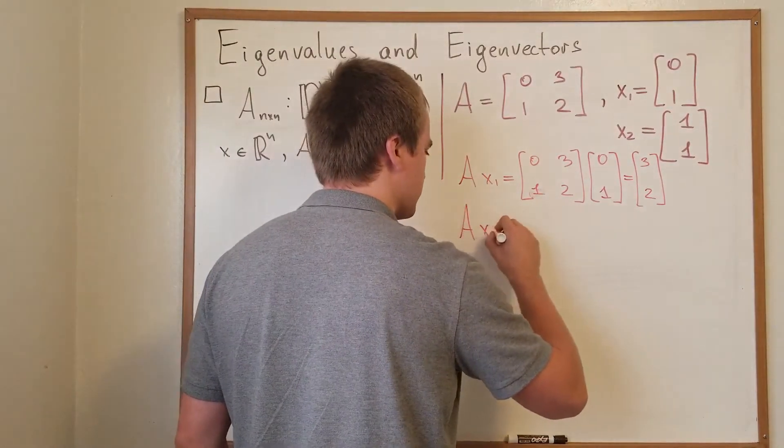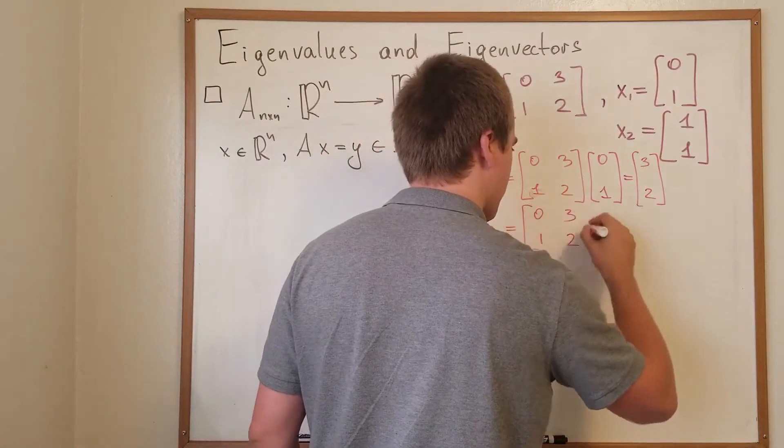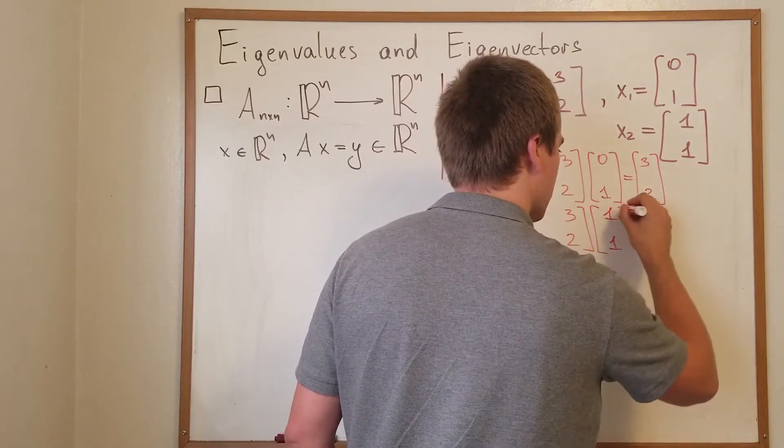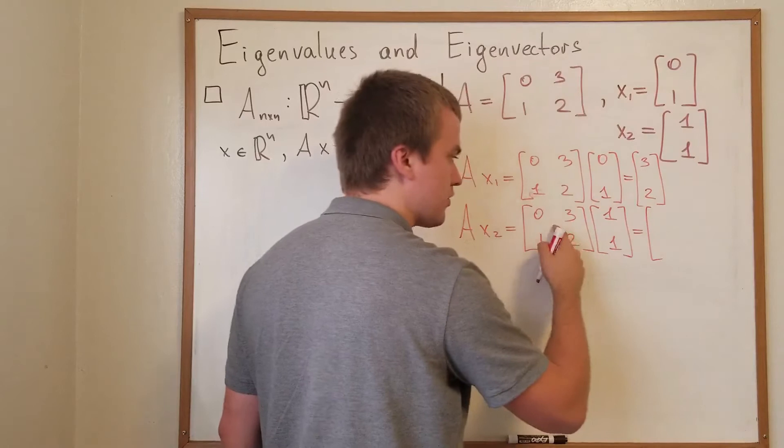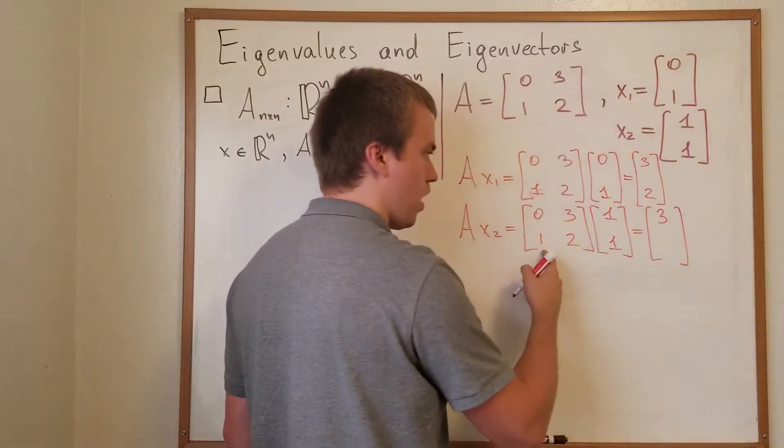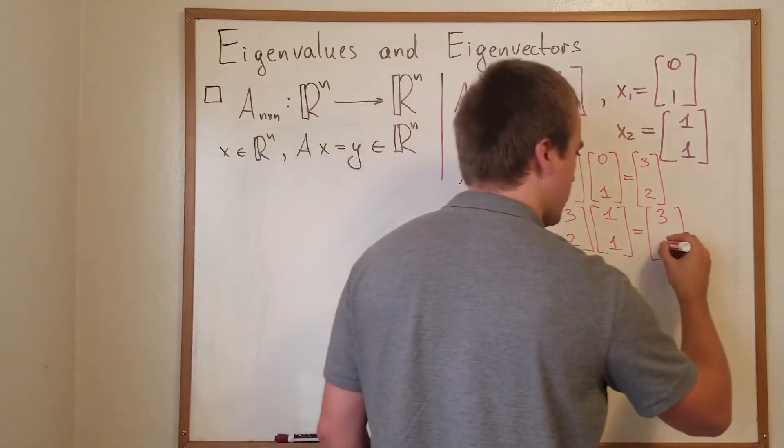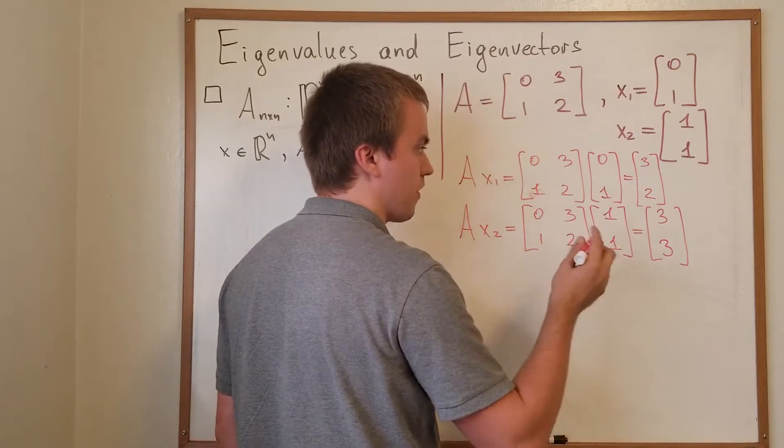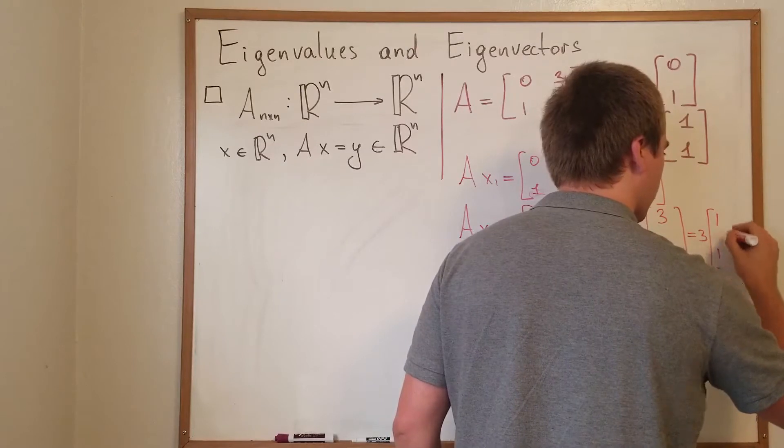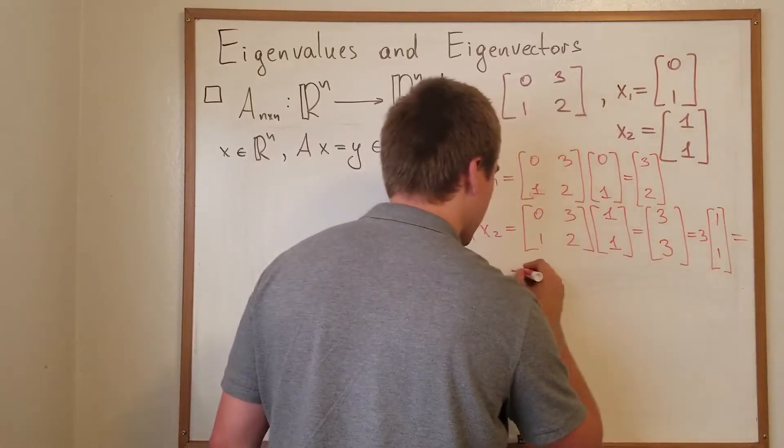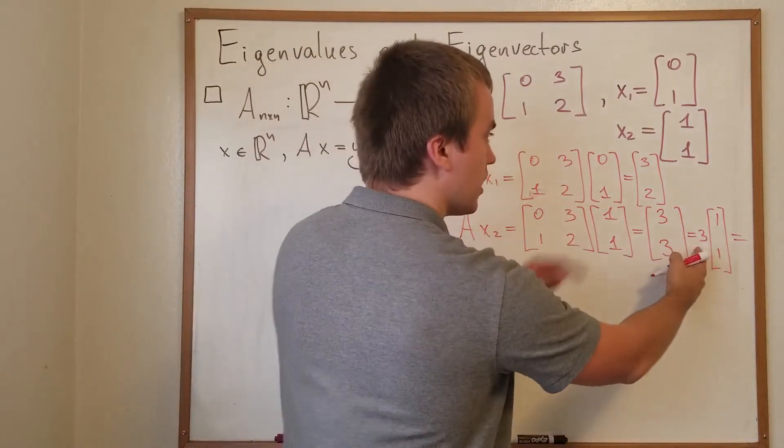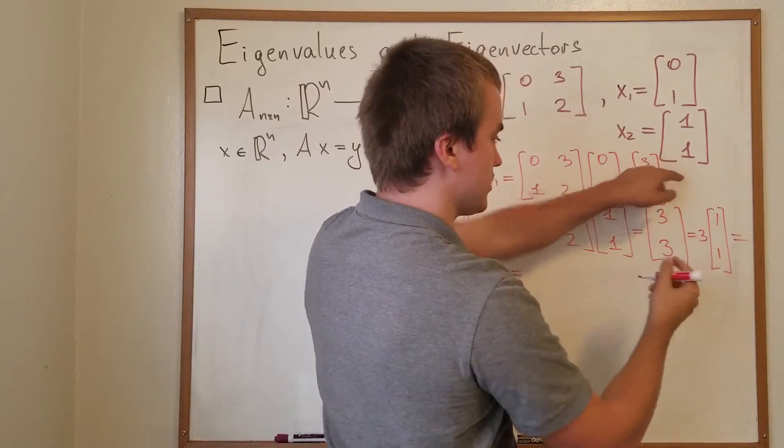Let's take A times x2. For this one I'm gonna get [0, 3; 1, 2] times [1, 1]. From here I can see that my first entry is gonna be 0 plus 3 so it's 3, and my second entry is gonna be 1 plus 2 is also 3. And 3 here is a common factor so I can factor 3. So we're gonna get 3 times [1, 1]. Or in other words, if I take my vector x2 multiplied by matrix A I'm gonna get 3x2.